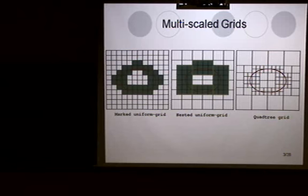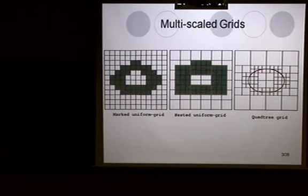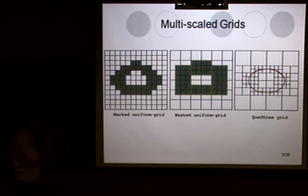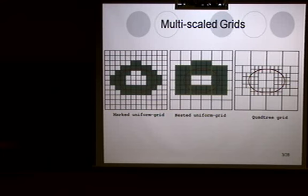I think there are basically three kinds of multi-scale grids. First one is on the uniform grid, we just mark grid cells that we are going to use. The second one is on the uniform grid, we patch fine uniform grid. The third type is quadtree grid. From the big rectangle, we just split it, keep splitting whenever needed.